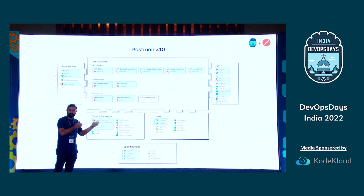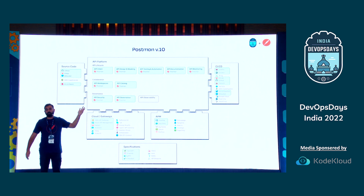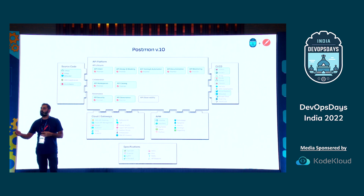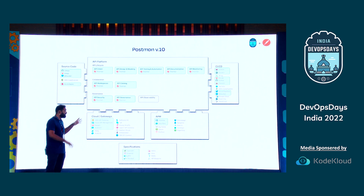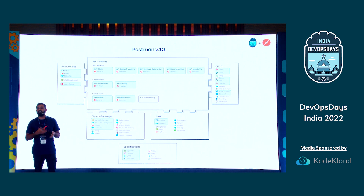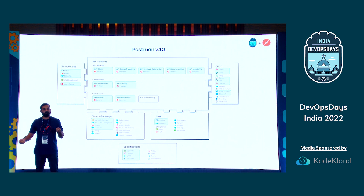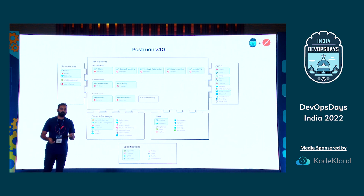For the last leg of API development — the monitoring part — we have integrations with the likes of Datadog and New Relic, where you can monitor key metrics of your API. Beyond this, we are always striving to support all sorts of specifications and protocols. We have support for gRPC, GraphQL, and more.